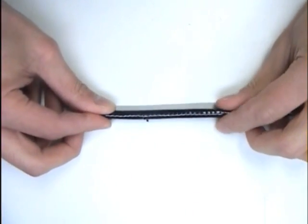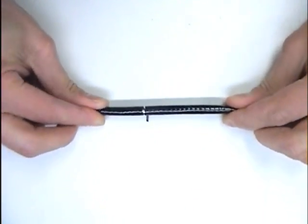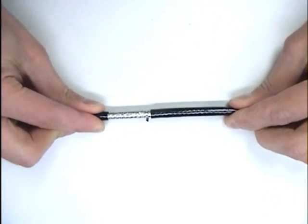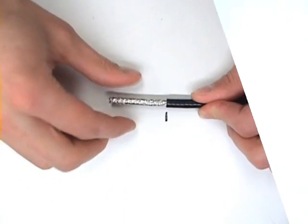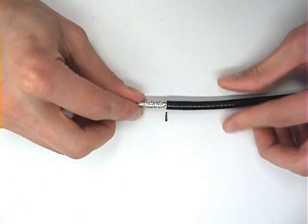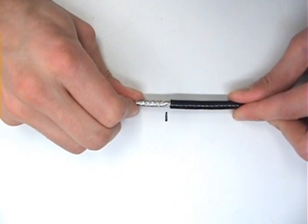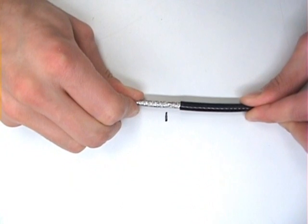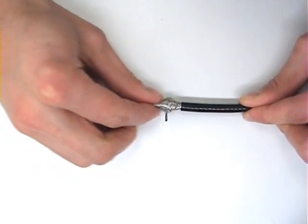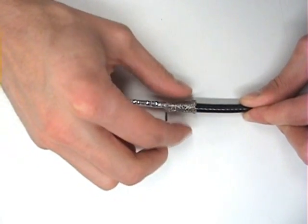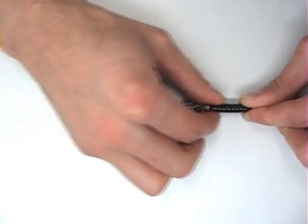Next, remove the jacket. Now, use one hand to hold the shield while the other pulls the jacket back. Fold the braid onto the jacket to keep it from sliding back up.